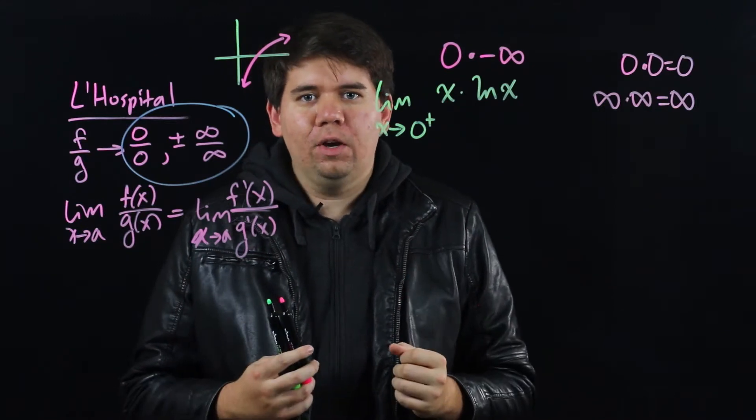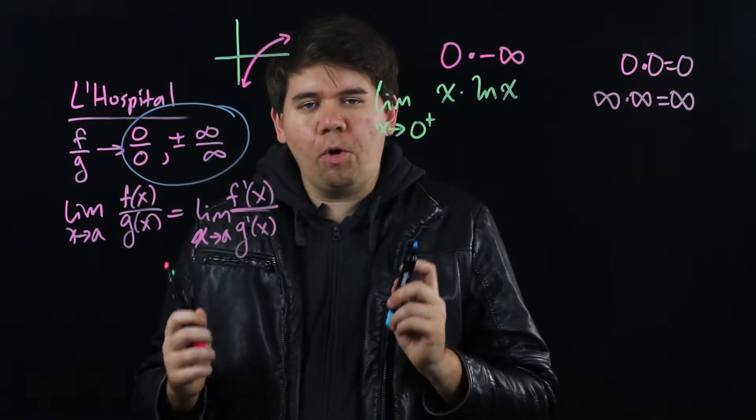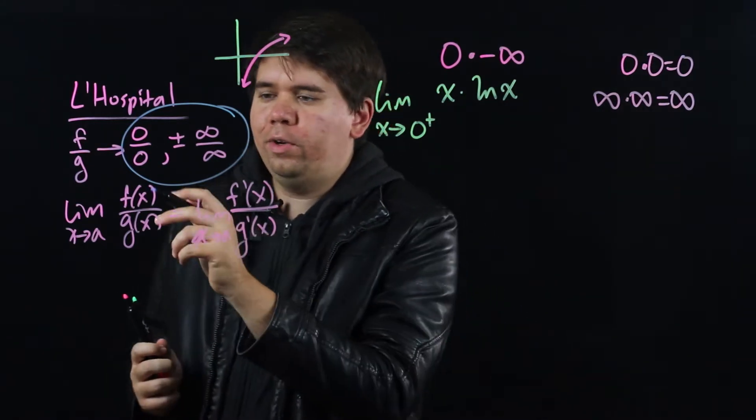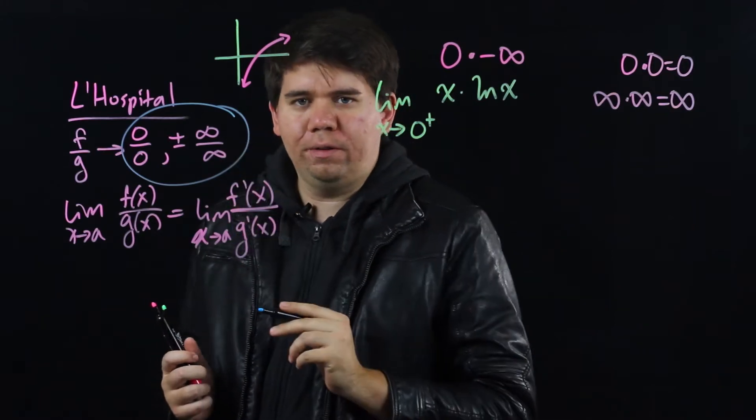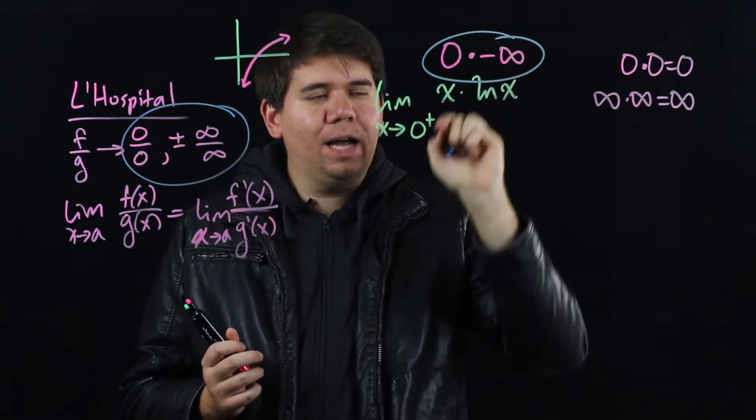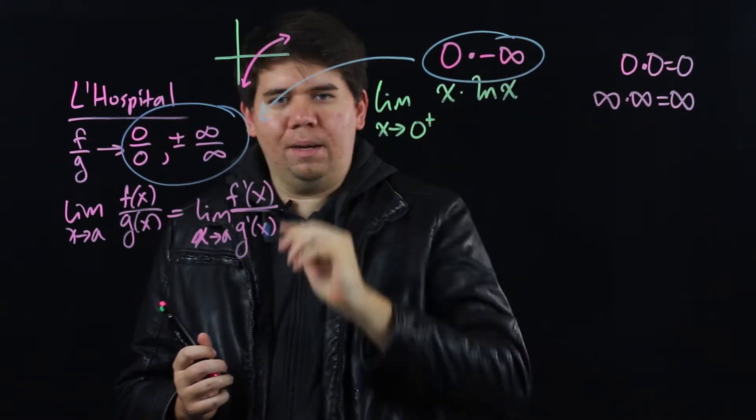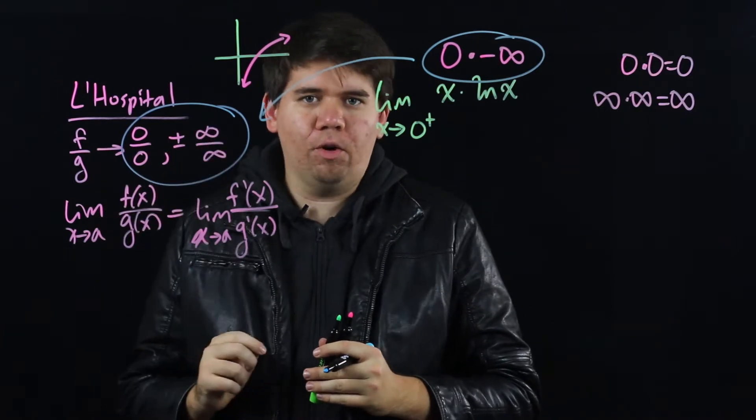In order to find out, again we want to use L'Hopital's rule. But recall our problem, L'Hopital's rule only works when you have something in the form of 0 over 0 or infinity over infinity. So we need to figure out a way of changing this product, 0 times infinity, into something that's either of the form 0 over 0 or infinity over infinity.